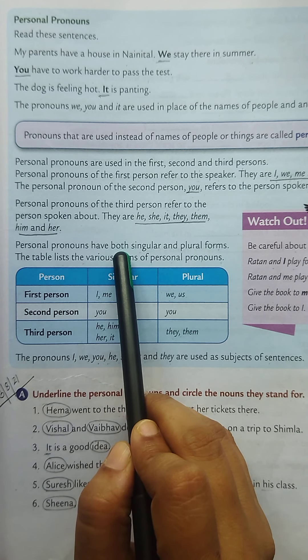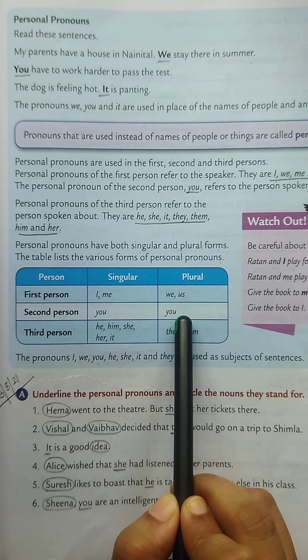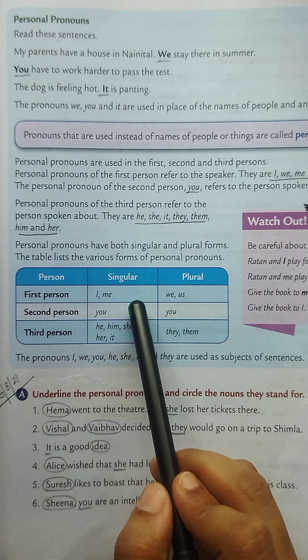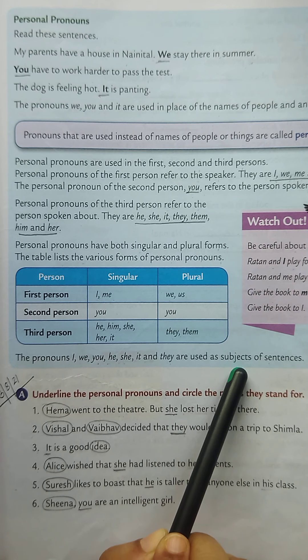The table lists the various forms of personal pronouns. First person singular: I, me. Plural: we, us — we is the plural of I, and us is the plural of me. Second person singular and plural: you — you is used as both singular and plural pronoun. Third person singular: he, him, she, her, it. Plural: they, them.